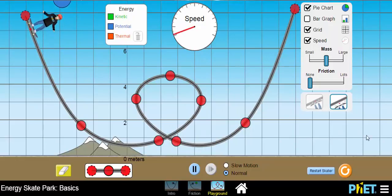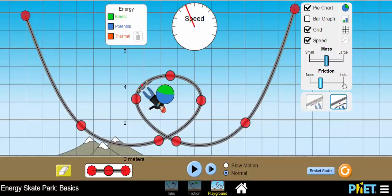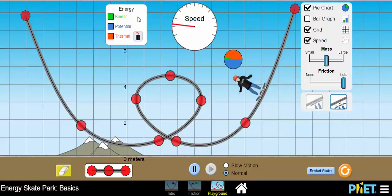Eventually, they will ask you to change the friction. When you want to do that, you will at the end just simply slide the friction back up to lots, hit play, and you can observe what happens there. I don't want to give too much away.